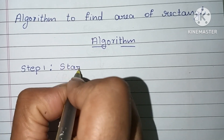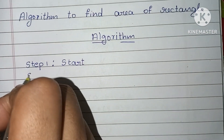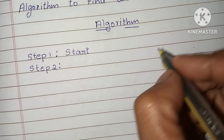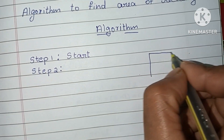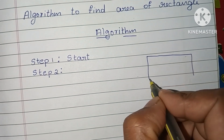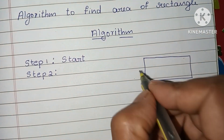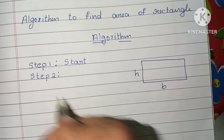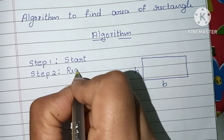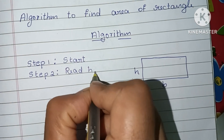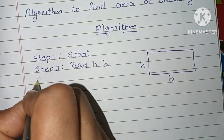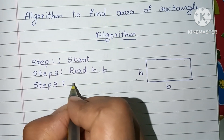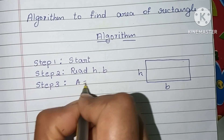In Step 2, we have to read the input values. To find the area of a rectangle, we need h and base — that is, height and base of the rectangle. So here we have to read h and b.